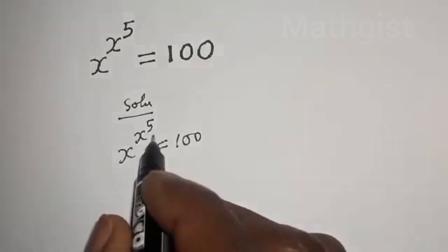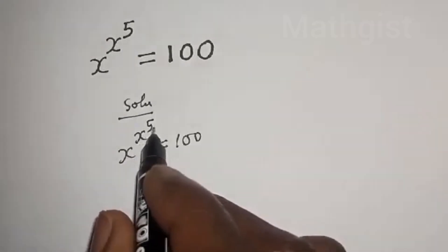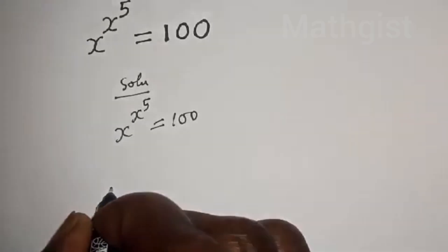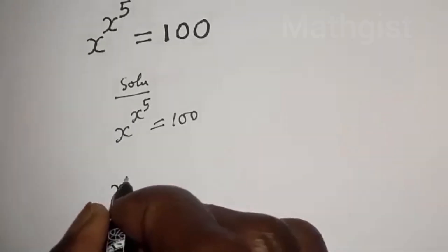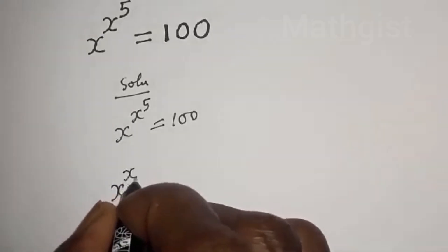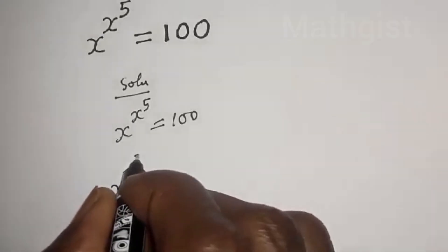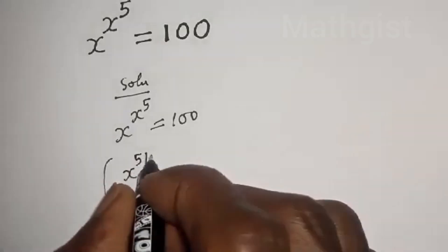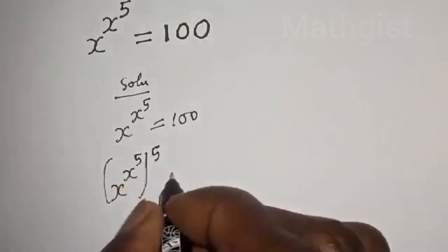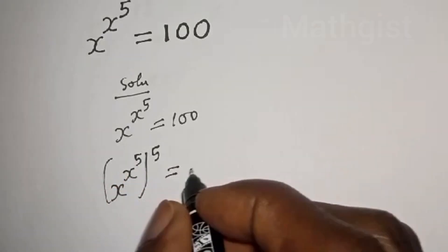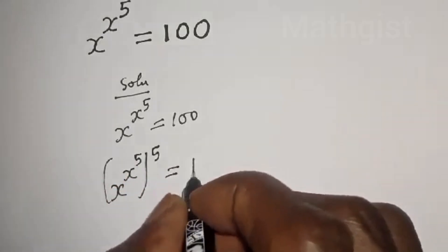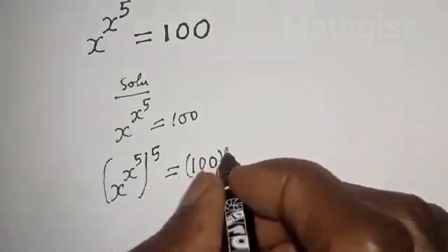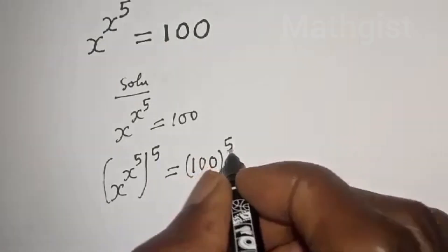Let's multiply the exponent of both sides by 5. That is, s raised to power s raised to power 5, all to the power 5, is equal to 100 to the power 5.